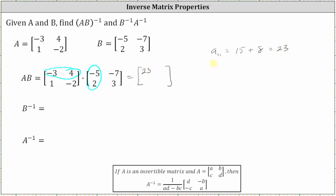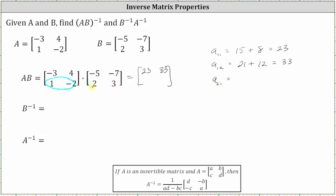To find the element in row one, column two, we multiply row one in the first matrix and column two in the second matrix. This gives us negative three times negative seven, which is positive 21, plus four times three, which is 12, which is equal to 33. Now let's find the element in row two, column one, by multiplying row two in the first matrix and column one in the second matrix. We have one times negative five, which is negative five, plus negative two times two, which is negative four, which is negative nine.